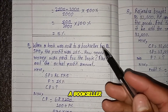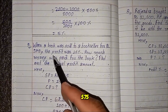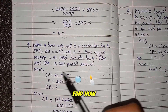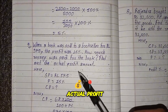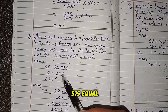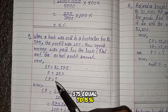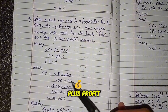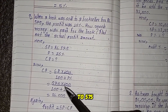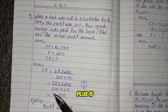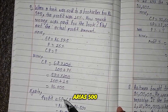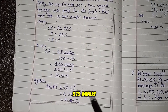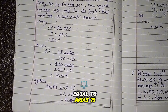Question 7: When a book was sold to a bookseller for RS 575, the profit was 15 percent. How much money was paid for the book, and find the actual profit amount. SP equals RS 575, profit equals 15 percent. CP equals SP multiplied by 100 divided by (100 plus profit percent) equals 575 multiplied by 100 divided by 115 equals RS 500. Actual profit equals SP minus CP equals 575 minus 500 equals RS 75.